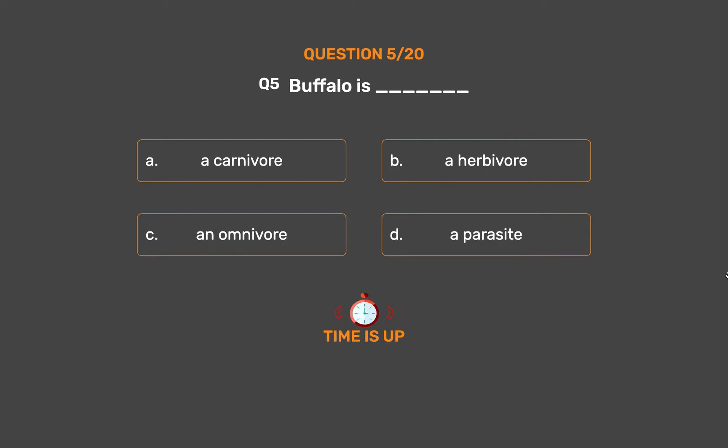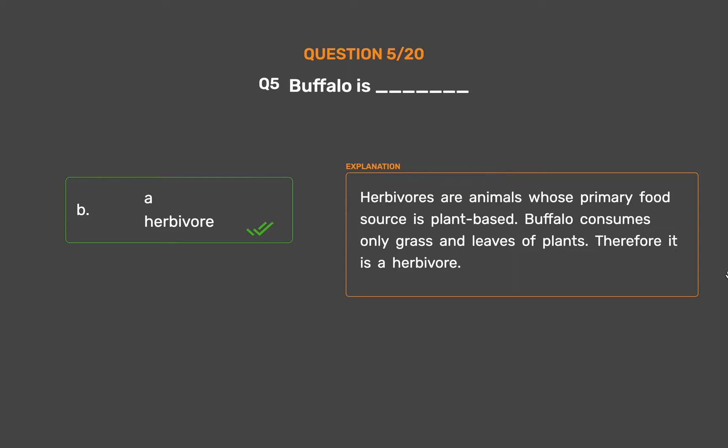The correct answer is Option B, A herbivore. Herbivores are animals whose primary food source is plant-based. Buffalo consumes only grass and leaves of plants. Therefore it is a herbivore.